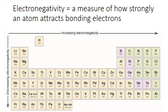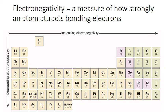Electronegativity is a unitless scale calculated based on how much energy is required to break different types of bonds. It follows predictable periodic trends, with higher values associated with the smaller nonmetals on the upper right of the periodic table. Fluorine is the most electronegative element with the strongest drawing power for electrons. Large alkali metals like cesium and francium are the least electronegative, with the least attractive power for electrons.